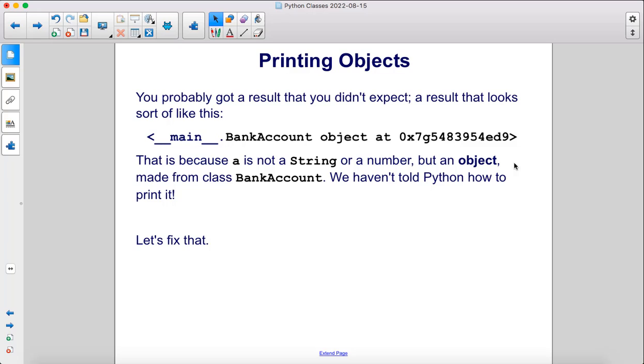You probably got a result that you didn't expect, a result that looks sort of like this. That's because A is not a string or a number, but an object made from class BankAccount. We haven't told Python how to print it. Let's fix that.